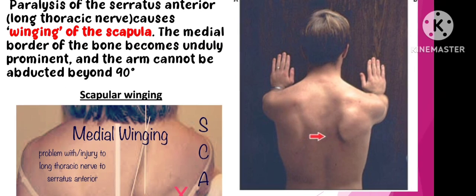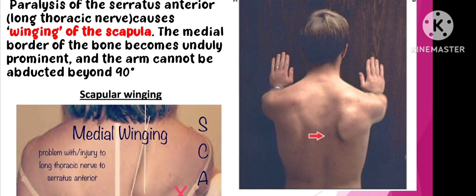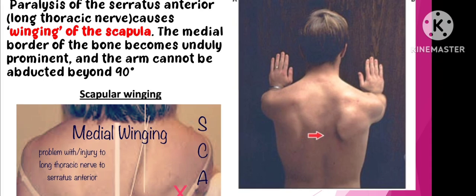In winging of the scapula, the medial border of the scapula becomes very prominent — it is very prominent and visibly sticks out.